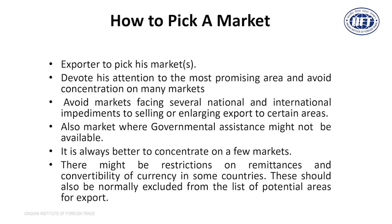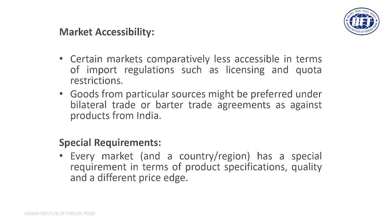Also one more thing which is important is the non-availability of export assistance. Some countries — the export assistance is not available, ECGC doesn't give the cover. Don't go to such markets. There are certain special requirements of the market. For example, if you visit Russia, your charger is not going to help you — they have a different set of PIN. You go to USA and some countries, you will see that your 220 voltage is not really working. Product specifications will have to be taken into consideration. Distant location means the freight and logistics related issues might create a problem for you — the accessibility of the market, restrictions on remittances, etc. All of these things will have to be taken into consideration when you are going.